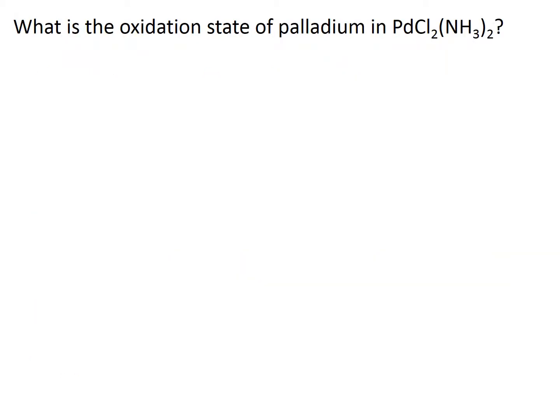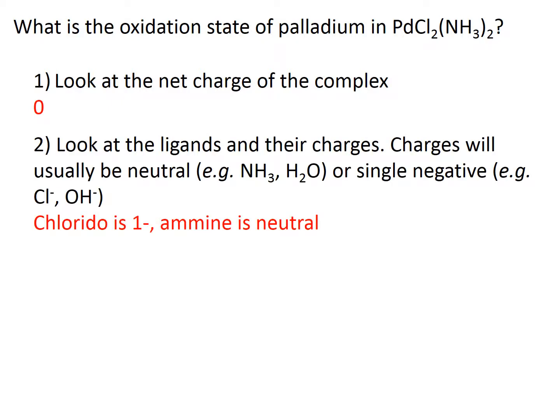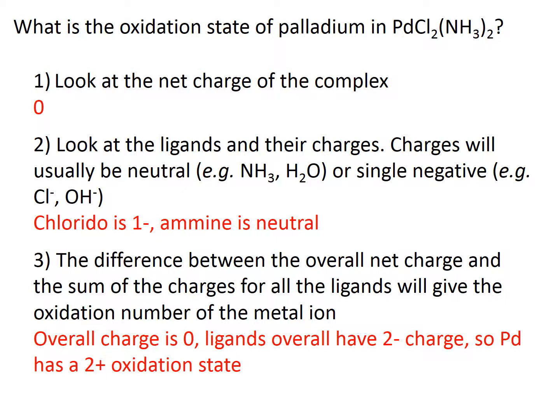Here is another example: working out the oxidation state of palladium in this complex. This complex is neutral, so it has no net charge. We have two types of ligands: a chlorido ligand, which has a minus 1 charge, and an amine ligand, which is neutral. Because we have two chlorido ligands, the overall ligand charge will be 2-. So now we take the overall charge of 0 and subtract the overall ligand charge of 2-, which gives us an oxidation state for palladium of 2+.